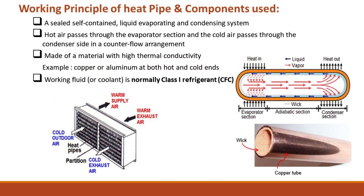Working Principle of Heat Pipe and Components Used: A sealed, self-contained liquid evaporating and condensing system. Hot air passes through the evaporator section and cold air passes through the condenser side in a counterflow arrangement. Made of a material with high thermal conductivity — for example, copper or aluminum — at both hot and cold ends. The working fluid or coolant is normally a class I refrigerant, CFC.